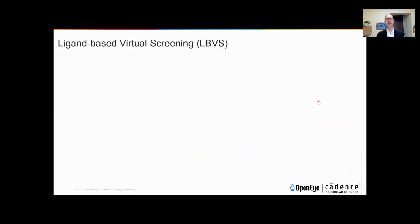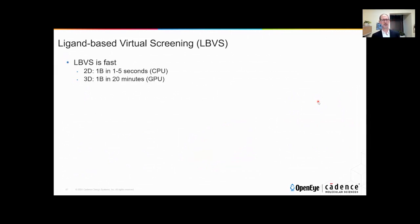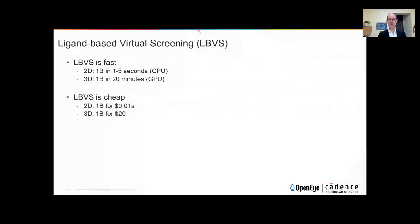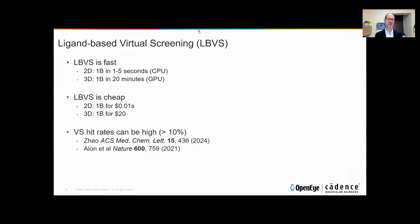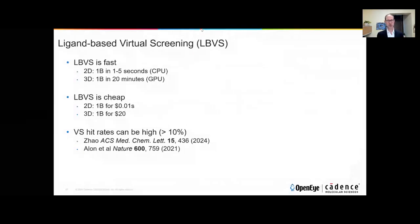To circle back to the comparison between computation and experiment: these ligand-based methods are extremely fast. We can screen billions of molecules in a few seconds even on CPUs with modern fingerprint methods, and even 3D methods — our FastROCS GPU approach — can screen a billion molecules in about 20 minutes. Compute costs for a billion molecules are in the cents range for 2D and in the $20 to $25 range per billion for 3D. With appropriate care, virtual screening can return much higher hit rates than experimentation — hit rates well in excess of 1 in 100 have been reported, orders of magnitude higher than from experiment.